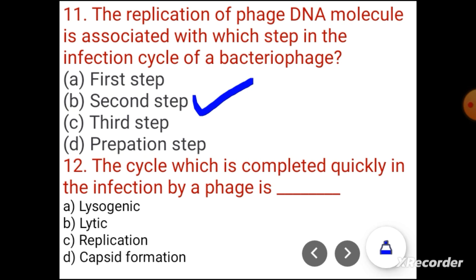Question 12. The cycle which is completed quickly in the infection of bacterial phage is: lysogenic, lytic, replication, or capsid formation. The correct answer is lytic.